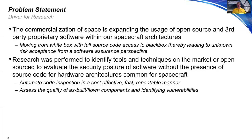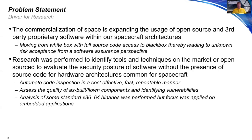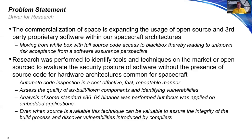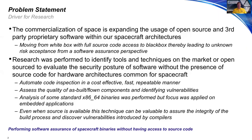Even if we had source code, we wanted to assess the quality of the as-built flown components — sometimes compilers introduce weaknesses. We focused on embedded applications and embedded architectures, but also looked at x86-64 binaries since that's a problem area for ground systems. Ground system software is also becoming somewhat of a black box, so we didn't want to leave that out, but really wanted to focus on the embedded side. We also looked into the integrity of the build process to see if there are vulnerabilities introduced by compilers. Essentially, the goal was performing software assurance of spacecraft binaries without having access to source code.